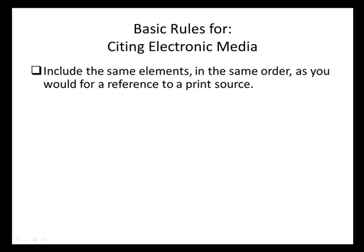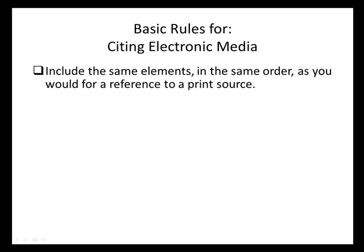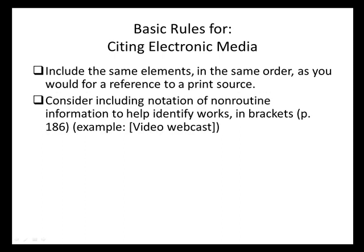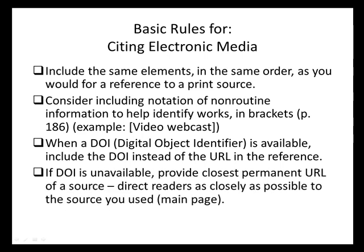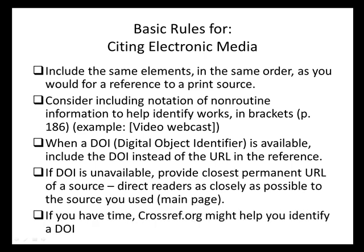Some rules for electronic media: we use the same elements of the citation in the same order as we would for any other print resource. We can include notation of non-routine information to help identify the item in brackets — see page 186 for more information. Include the DOI number if it is available. For electronic media, especially journal articles, APA requests that you include the home page of a journal if you retrieved an electronic journal article and the DOI number is not available. Please consult with your instructor for what they would like. It is not necessary, but crossref.org might help you identify a DOI number.